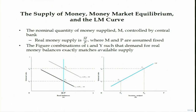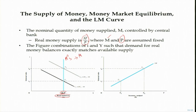It should also be noted that money supply here is expressed in real terms — that is, M divided by P (the price level). We assume the price level is also fixed, so real money supply is constant. In the next session, we will continue this discussion, examine factors that cause the LM curve to shift, and subsequently derive the IS schedule and IS curve. Thank you.